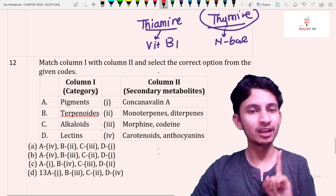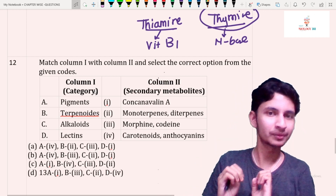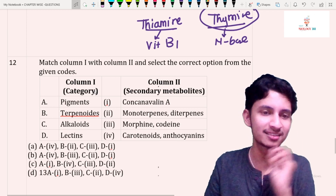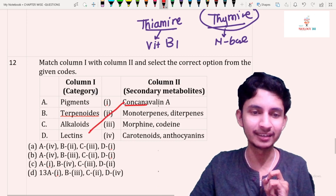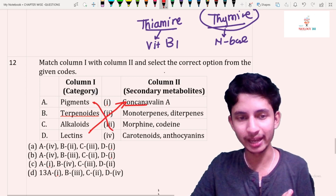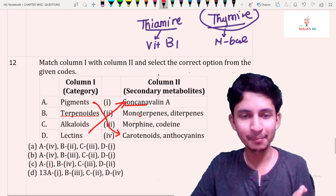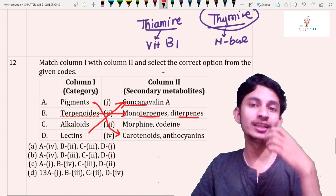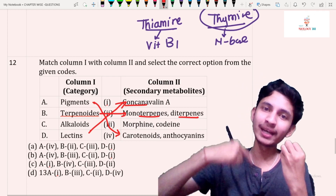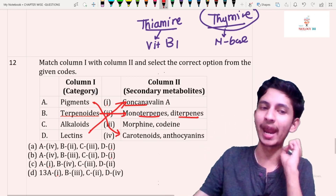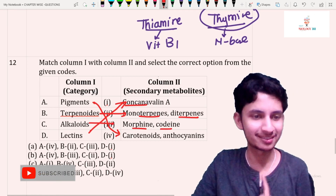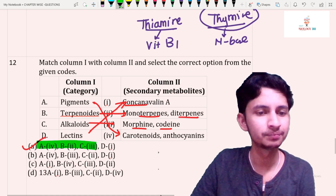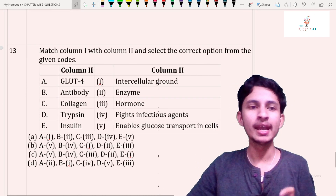Question number twelve: match the columns on secondary metabolites — very important, questions appear every year, and it appeared in NEET 2019. Concanavalin A is a type of lectin. For pigments: carotenoid and anthocyanin. Terpenoids — the name itself contains 'terpen,' so examples are monoterpene and diterpene. Alkaloids include opioids like morphine and codeine obtained from plants, which have medicinal uses. Matching these gives answer option E.